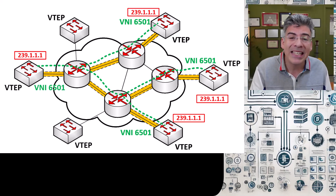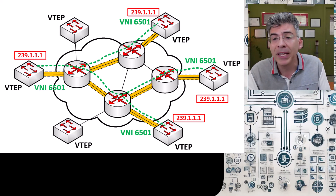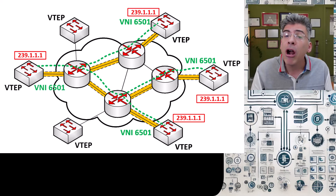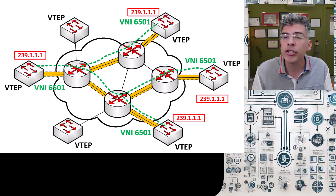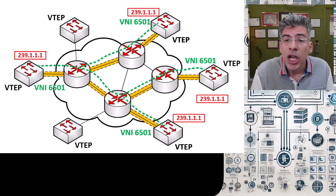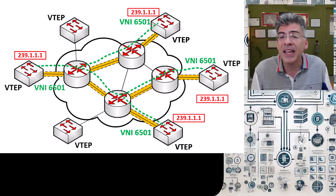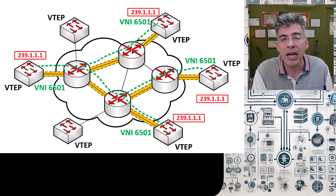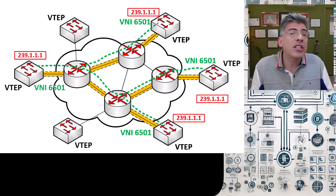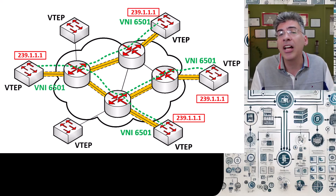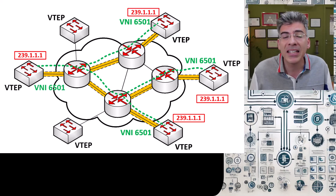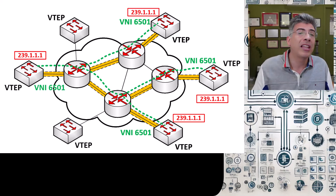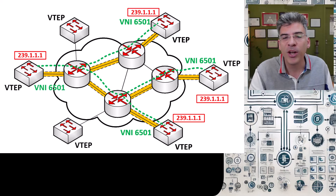Although this is the method for the VXLAN control plane defined by the RFC, there are other methods that may be more efficient, especially for much larger topologies. If you have thousands of leaf switches, you can imagine what kind of traffic the flood and learn methodology can cause on such a large network. That's the gist of the multicast underlay control plane for VXLAN, also known as the flood and learn methodology.